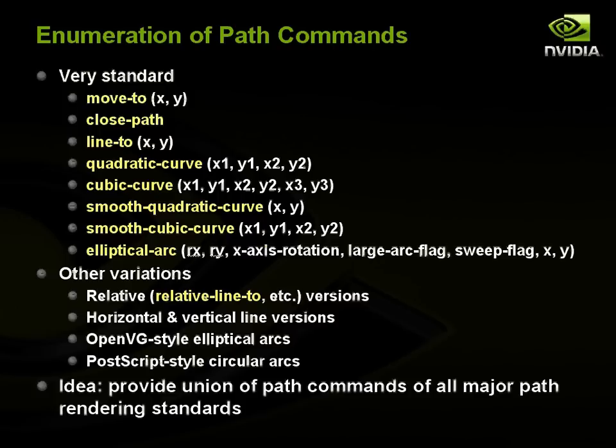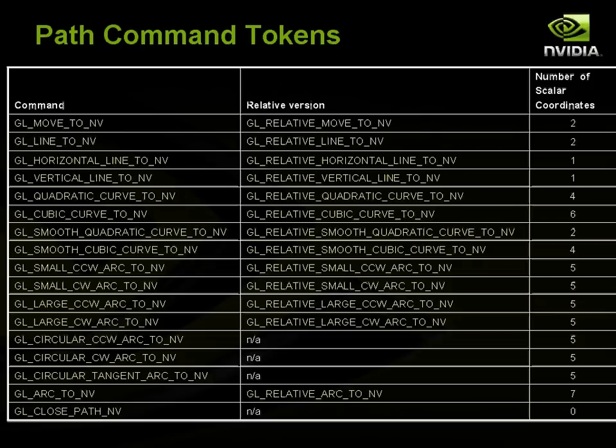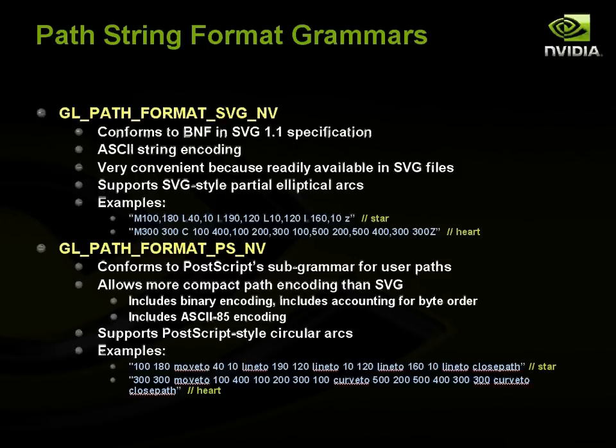The actual path commands are very standard. You can move to an XY location, draw a line to the next XY location, specify quadratic and cubic Bézier curves, draw elliptical arcs, and close the path. These are standard elements available in all the different path rendering standards. There are also many variations to support the variety across standards — relative versions, specialized versions for horizontal and vertical lines, specialized arcs for OpenVG and PostScript. The table shown has all the different path commands, their relative versions, and the number of scalar coordinates each expects.